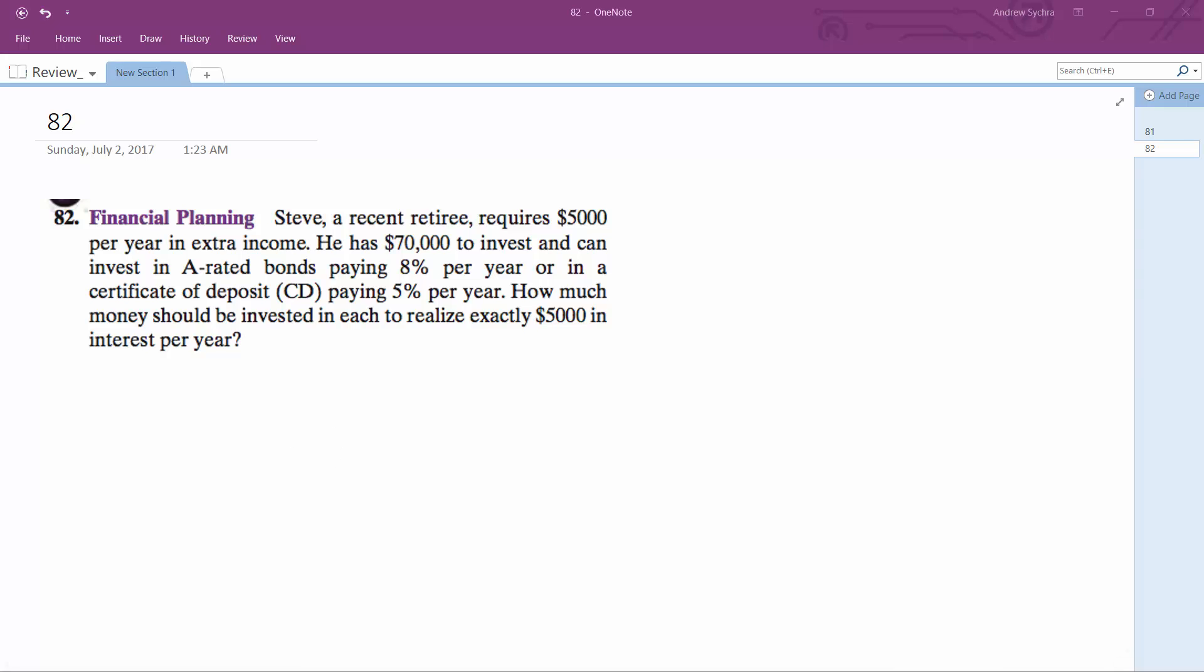All right, so Steve is a recent retiree who requires $5,000 per year in extra income. He has $70,000 to invest in bonds that pay 8% per year or certificates of deposit paying 5% per year. How much money does he need in each?